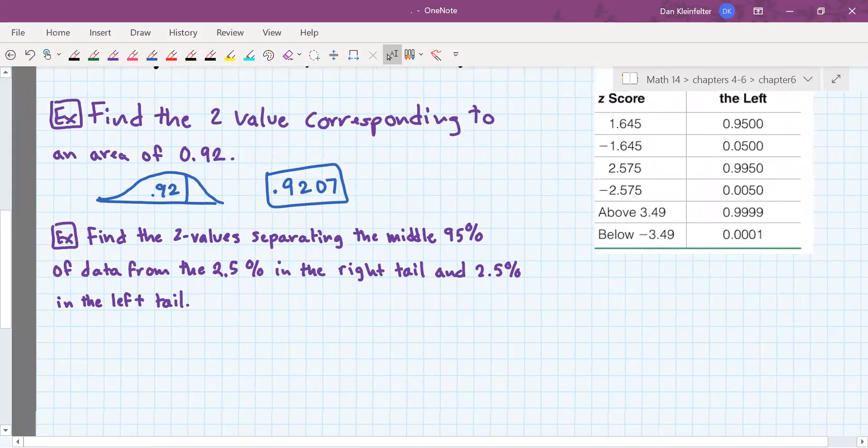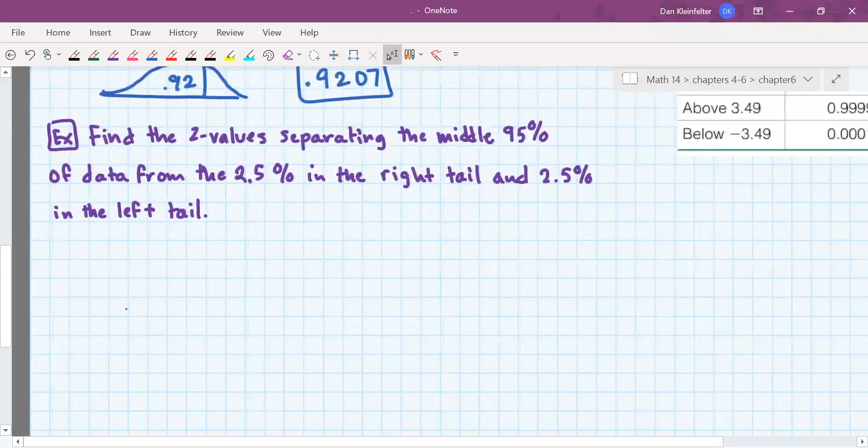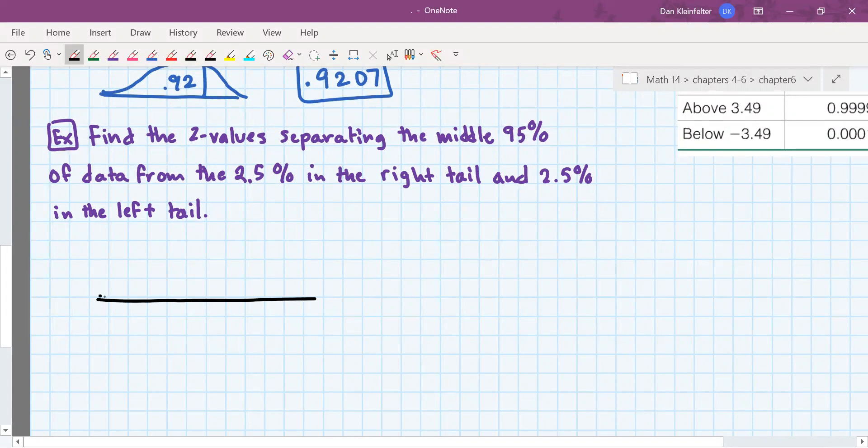Next, we want to find values separating the middle 95% of the data from the 2.5% in the right tail, and the 2.5% in the left tail. So a picture will make that easier to understand.